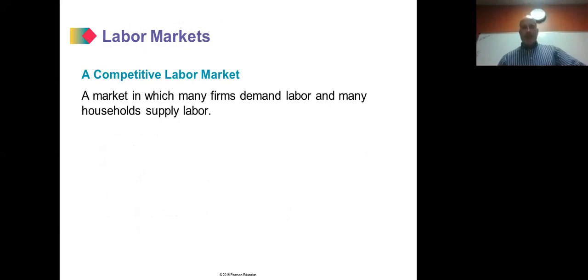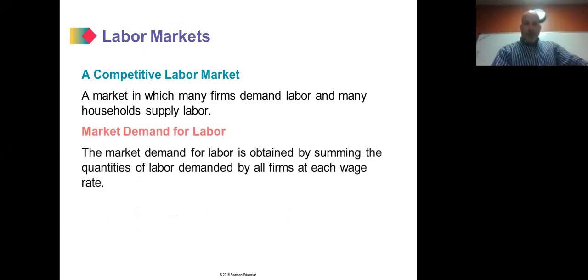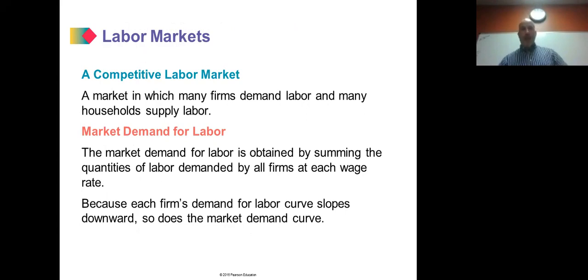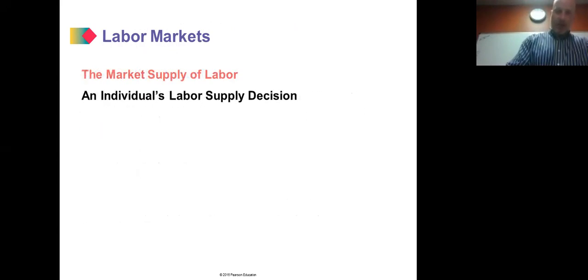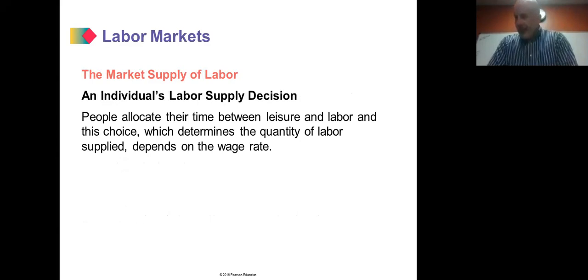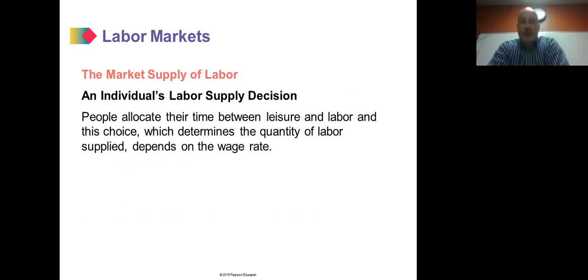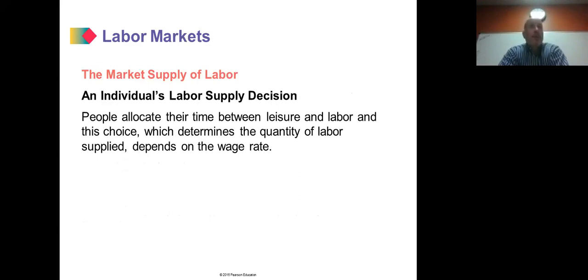In a market where many firms demand labor and many households supply labor, we have a competitive market. Each firm's demand for labor curve slopes downward, and so does the market demand curve. People allocate their time between leisure and labor, and this choice determines the quantity of labor supplied, which depends upon the wage rate.